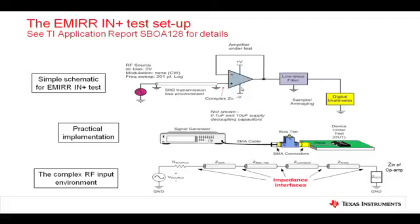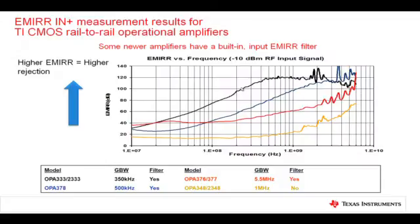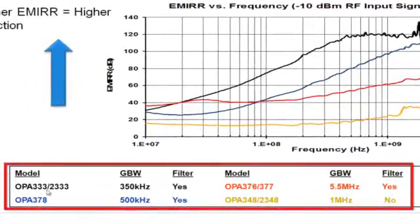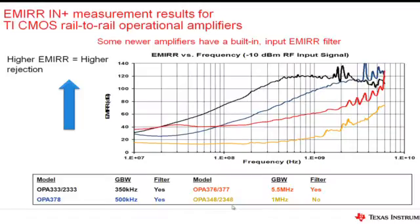Using this arrangement, we can measure the EMIRR of several modern CMOS operational amplifiers. Four different operational amplifiers have their EMIRR performance across frequency shown in this plot. The OPA333 has a gain bandwidth of 350 kHz and includes a filter. The OPA378 has a somewhat wider bandwidth and includes an input filter. The OPA376 has a 5.5 MHz gain bandwidth and includes an input filter. The OPA348 has a 1 MHz gain bandwidth and does not include an input filter.